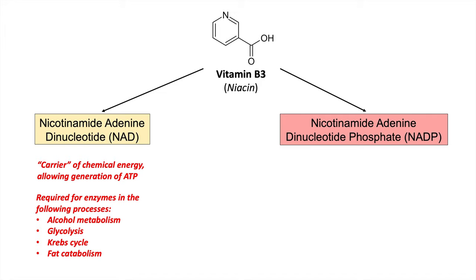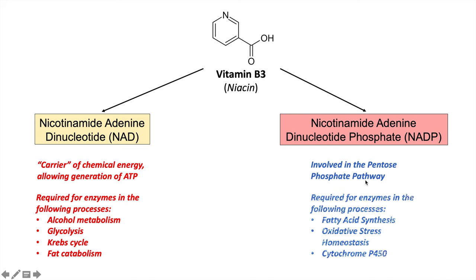Enzymes that require NAD as a cofactor include those in alcohol metabolism — such as alcohol dehydrogenase — glycolysis (glyceraldehyde 3-phosphate dehydrogenase), the Krebs cycle (alpha-ketoglutarate dehydrogenase), and fat catabolism. NADP is involved in the pentose phosphate pathway — remember the P in NADP stands for pentose phosphate pathway — and is required for enzymes in fatty acid synthesis, oxidative stress homeostasis, and the cytochrome P450 system in the liver.